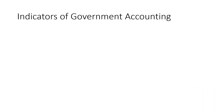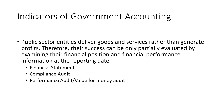What are the indicators of government accounting? Public sector entities deliver goods and services rather than generate profit — for example, building roads and bridges, providing free education, and free hospitals. Therefore, their success can only be partially evaluated by examining financial position or financial performance, because just because they are at a loss doesn't mean the government is not effective. There are three types of reporting done by the government. Number one is the financial statement, to determine if there is fiscal adequacy — meaning the government earns more than it spends.